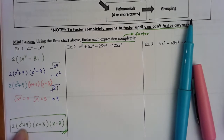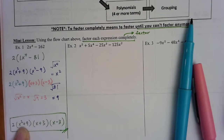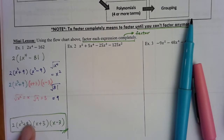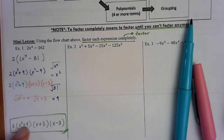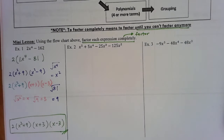You might ask why we can't factor x squared plus 9. Both are perfect squares, but the only instance where I can factor perfect squares is the difference. Since it's positive — a sum, not a difference — I cannot factor it.